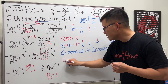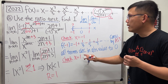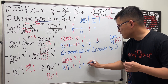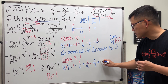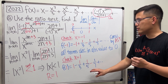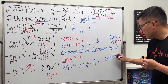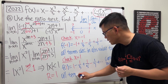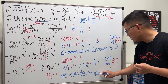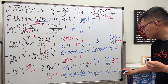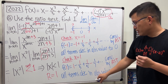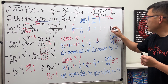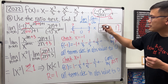Now we check the other endpoint, x equals 1. Plugging in gives f(1) = 1 minus 1/3 plus 1/5 minus 1/7 and so on. This is essentially the same situation — it also converges by the alternating series test, and all terms decrease in absolute value to zero. So we include x equals 1 as well. Therefore the interval of convergence is from negative 1 to 1, including both endpoints. That's part A.